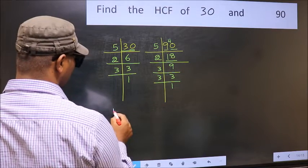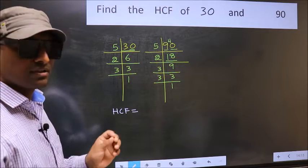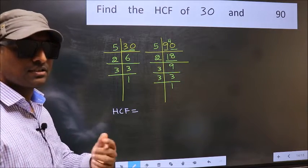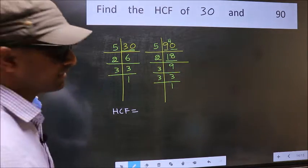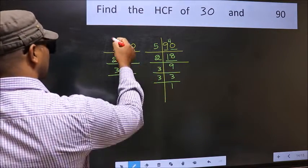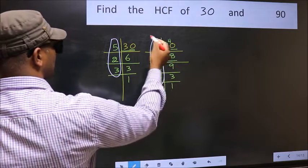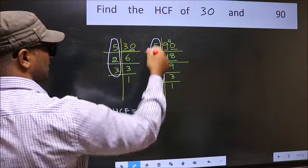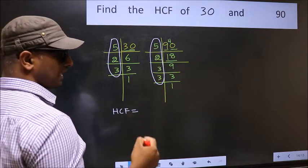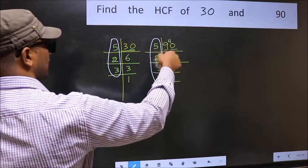Therefore, our HCF is the product of the numbers which should be present in these two places. That is here and also here. Here and here. So now let us find the numbers which should be present here and here.